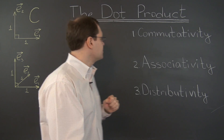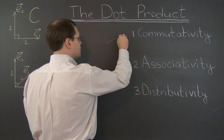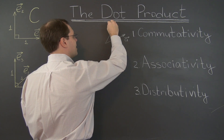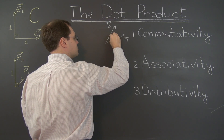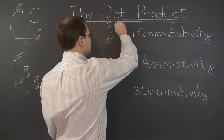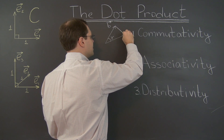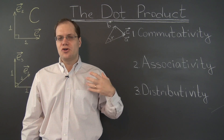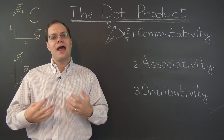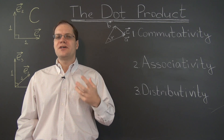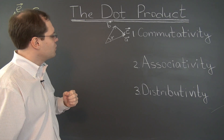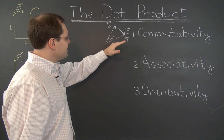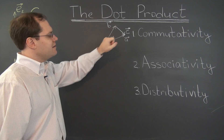Let's go after the law of cosines. Suppose we have a triangle where two of its sides are represented by vectors a and b, the angle between them is gamma, and the last side is denoted by the letter c. Our ultimate goal is to express the length of the vector c in terms of the lengths of the vectors a and b and the angle gamma.